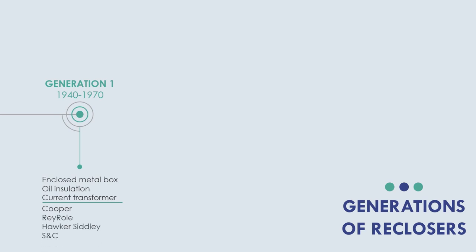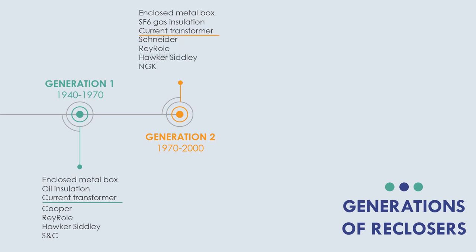Second generation period is from 1970s to 2000s. It is defined by the same characteristics except for insulation, which was changed to SF6 gas. The manufacturers were mostly the same with new players like NGK and Mitsubishi.